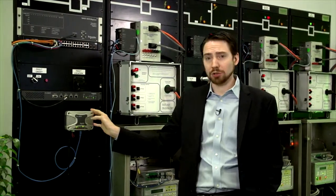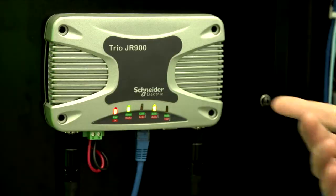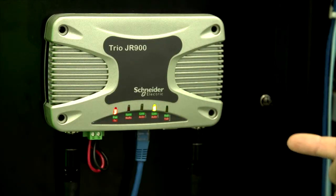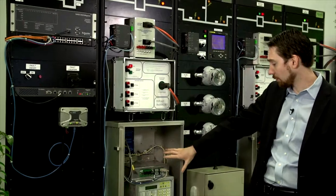Also we have on our wall is our Trio modem. This allows us to communicate wirelessly with our feeder downstream devices. And some of these devices will include things like our recloser here.